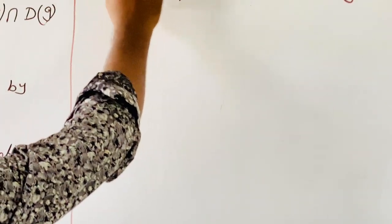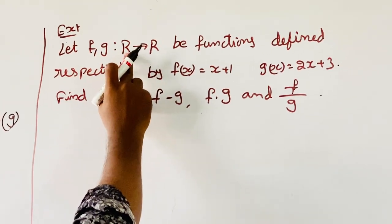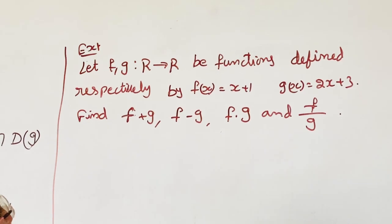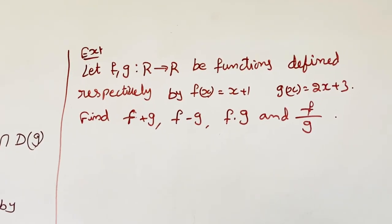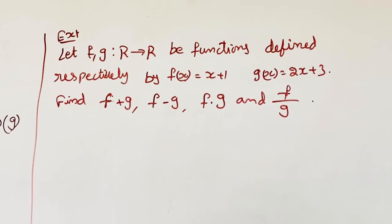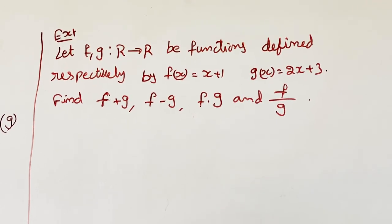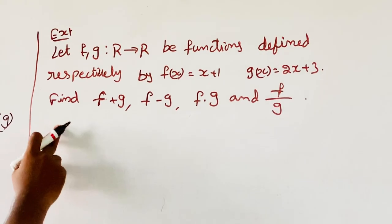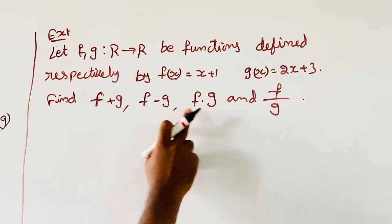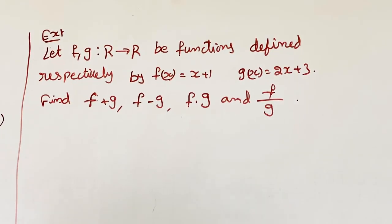Let F and G map R to R be functions defined respectively by F of X equals X plus 1 and G of X equals 2X plus 3. Find F plus G, F minus G, F into G, and F by G.